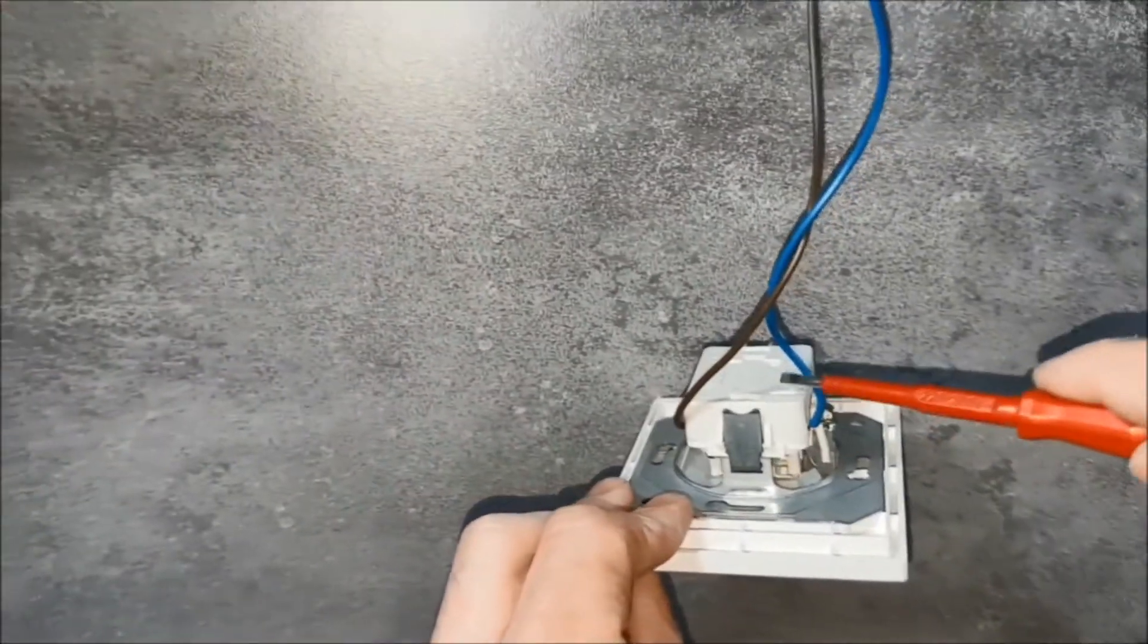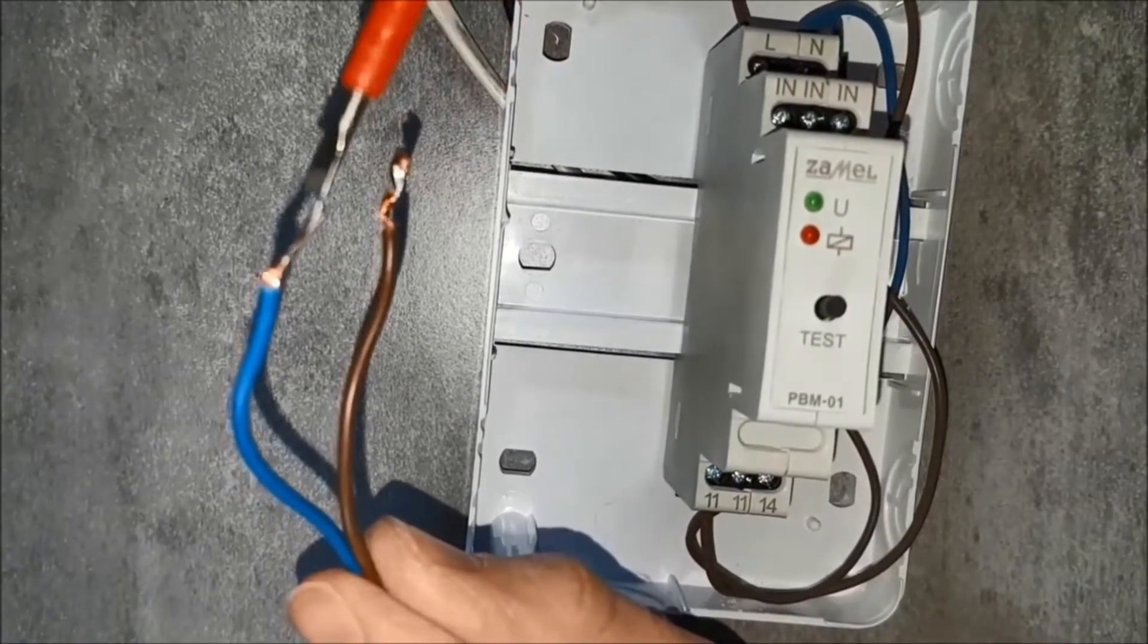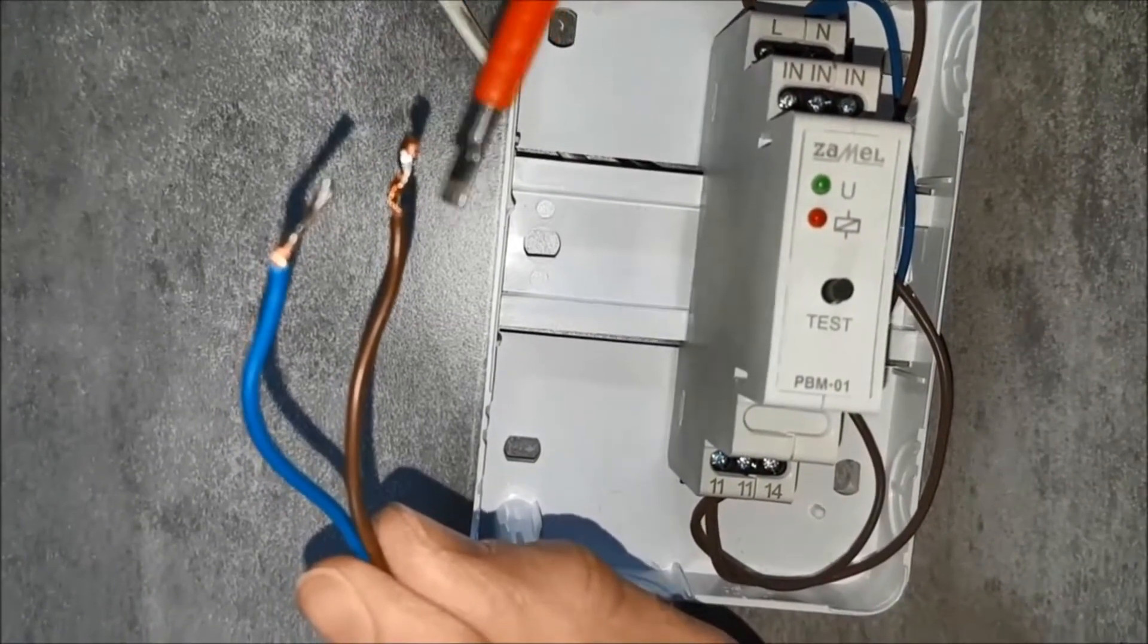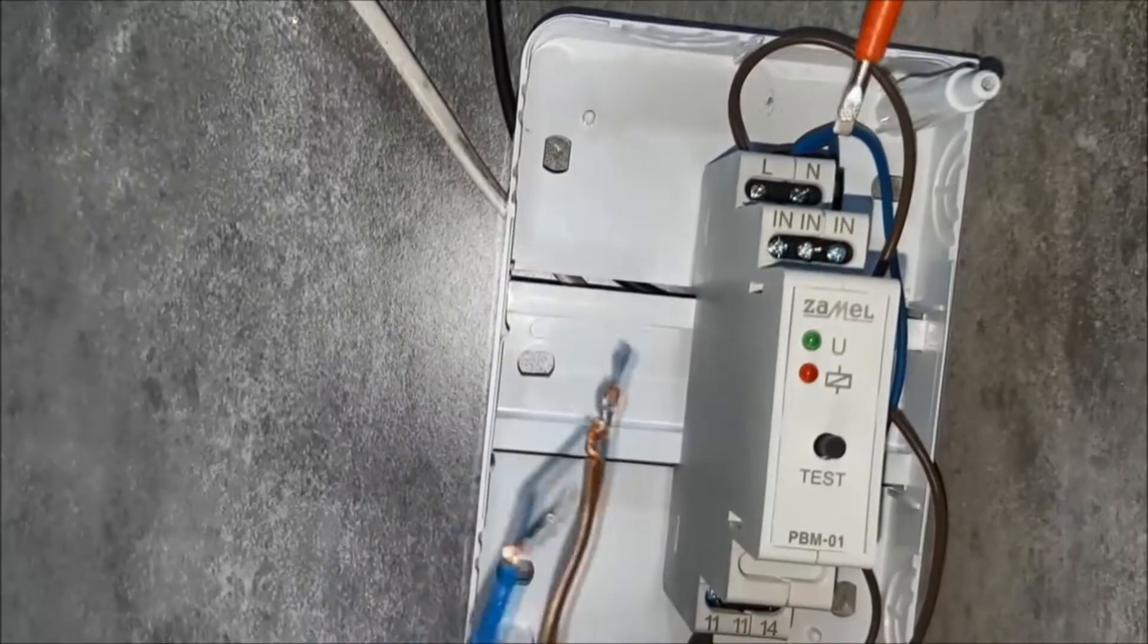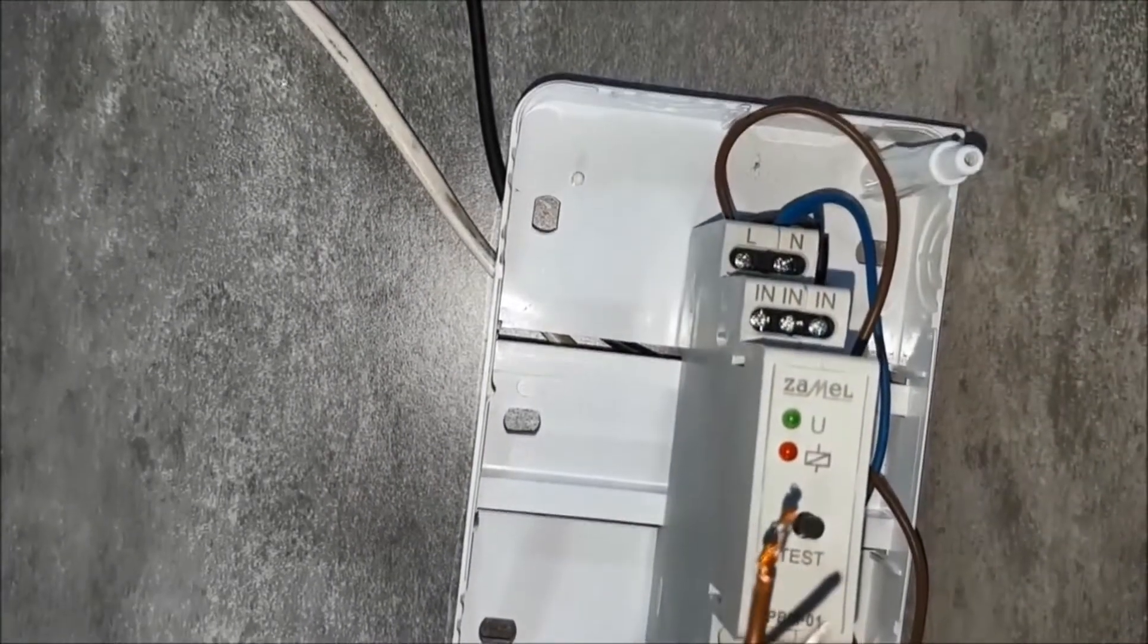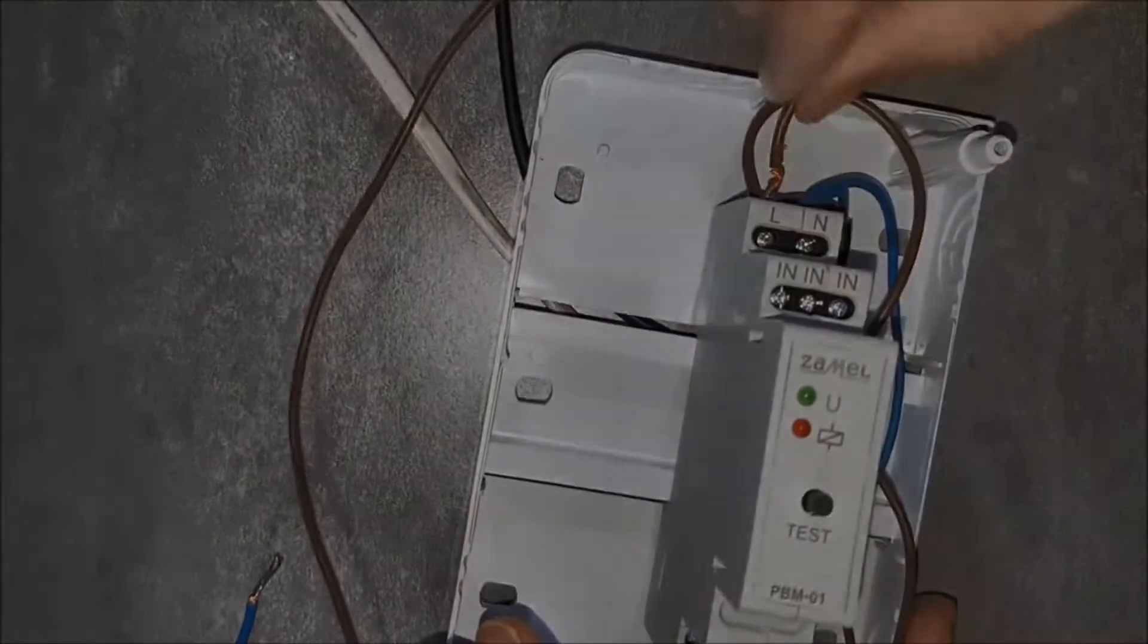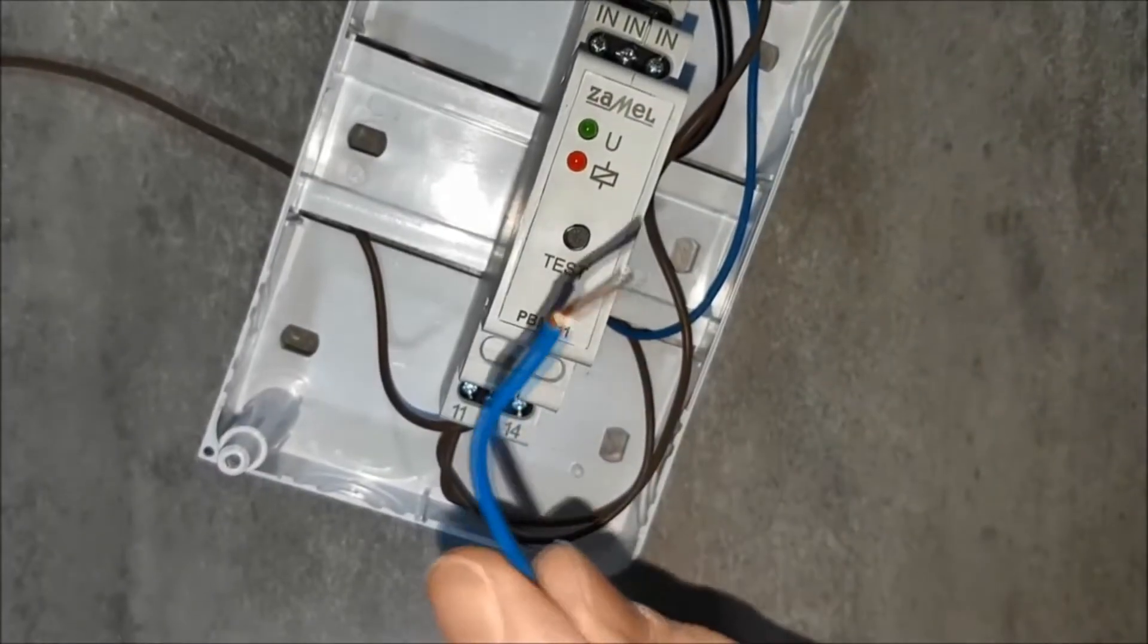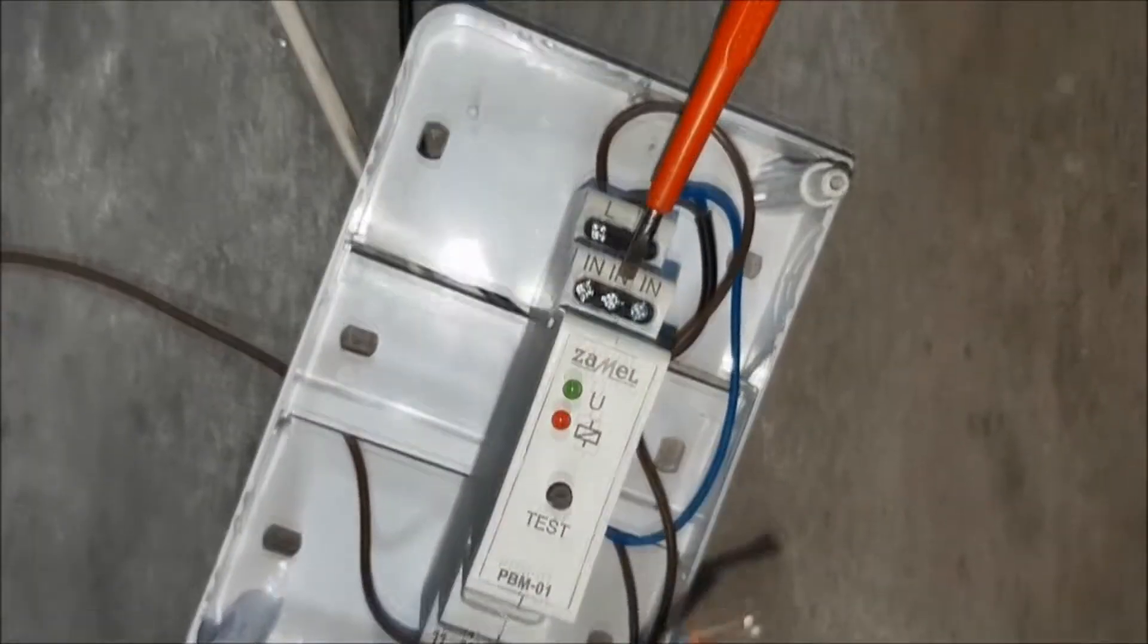Connect the relay control button. The first wire will pass the potential of the phase to the button. Connect the second wire to the I-N terminal.